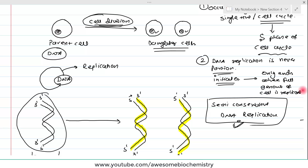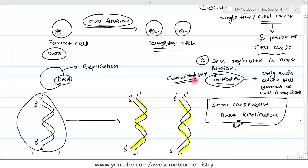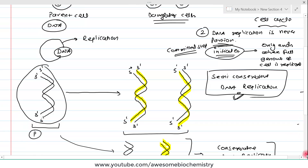DNA replication is a full process — once it starts, it ends only when the full genome is replicated. Initiation of DNA replication is the committed step, meaning once that step has occurred, it never stops until the process is complete and the DNA genome is fully replicated.